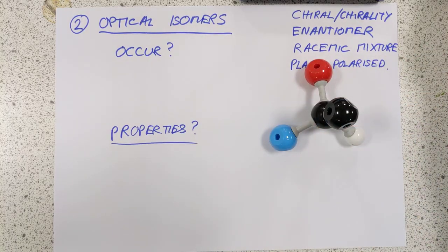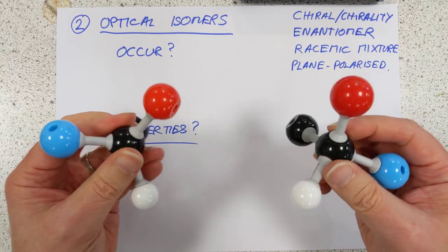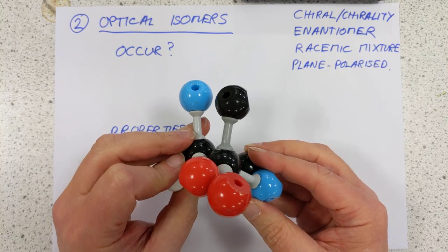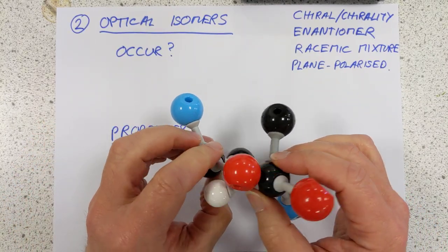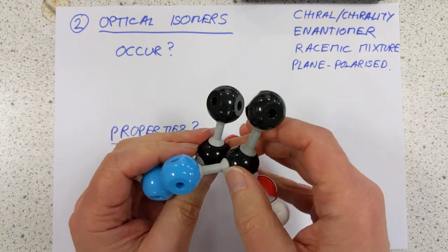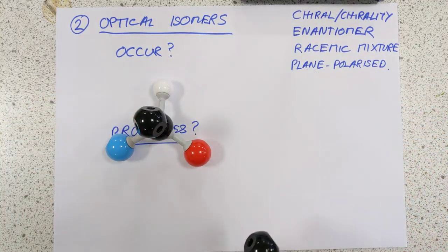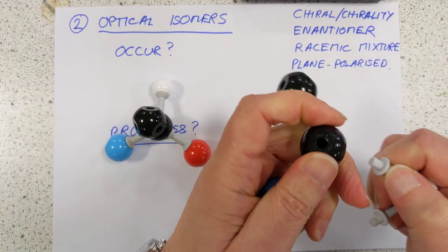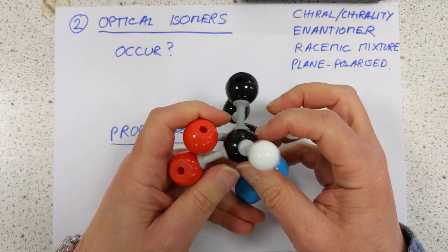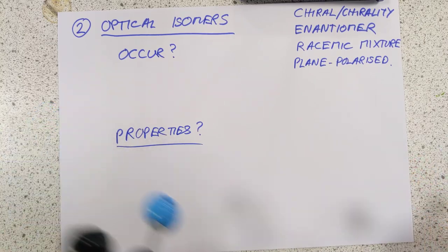I have some props here. At first glance, these would appear to be the same molecule. If I try and superimpose them — put the red on the red, the white on the white — the black and the blue are the wrong way around. Maybe I've just done it the other way around. Let's sort the black and the blue — there we go. The black and the blue superimpose, but now the red and the white don't match up. That is because when I built these, I simply swapped around two of the substituents on the central atom. These are an example of optical isomers.